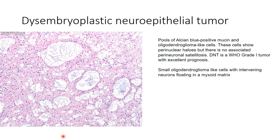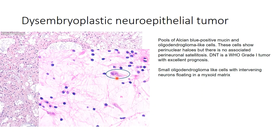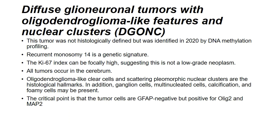Disembryoplastic neuroepithelial tumor (DNET) is composed of cystic spaces containing Alcian Blue positive mucin. The slide shows cystic spaces with bluish-tinged mucin containing oligodendroglia-like cells with intervening neurons floating in a mucomyxoid matrix, referred to as floating neurons. Diffuse glioneuronal tumor with oligodendroglioma-like features and nuclear clusters (DGONC) was not histologically defined but was identified in 2020 by DNA methylation profiling. It is associated with recurrent monosomy 14 as its genetic signature; the Ki-67 labeling index is quite high and most tumors occur in the cerebrum.